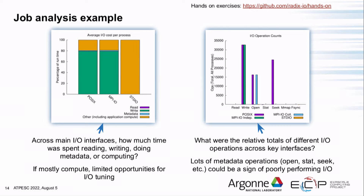The IO operation counts plot shows across POSIX, different MPIO APIs, and standard IO how many operations were issued — in this case upwards of 33,000 write calls. One thing to watch for is large numbers of metadata operations like seeks or syncs, which can be a sign of inefficient IO and can really drop down your IO efficiency.